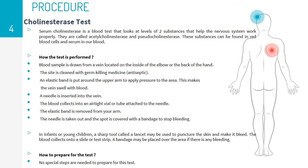5. The elastic band is removed from the arm. 6. The needle is taken out and the spot is covered with a bandage to stop bleeding. In infants or young children, a sharp tool called a lancet may be used to puncture the skin and make it bleed. The blood collects onto a slide or test strip. A bandage may be placed over the area if there is any bleeding.